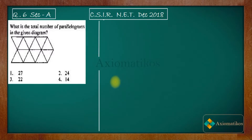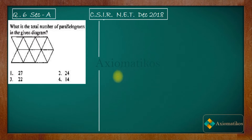Hello dear students, welcome to Axiomaticos. This video is part of the solution series for CSIR NET December 2018, and we are doing problem 6 of section A. It's a problem of general aptitude.